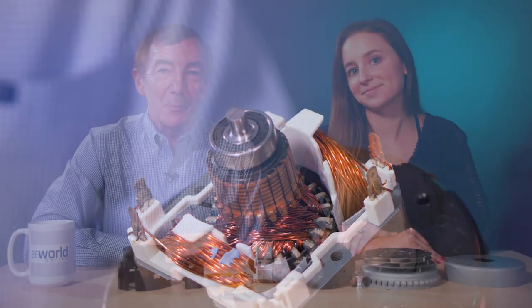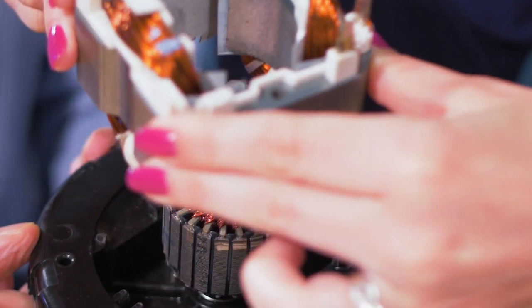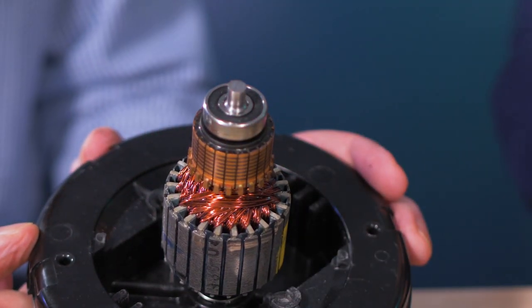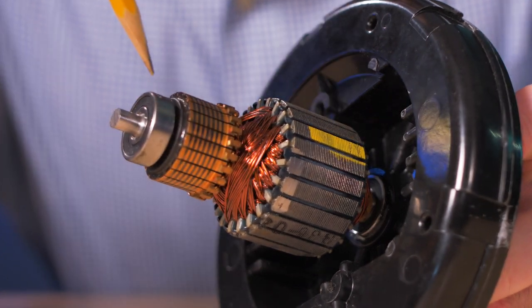Removing the thermoset bracket brings a view of the ball bearing assembly at the end of the motor shaft and it also lets you lift the stator assembly out from where it sits in the thermoset base. This gives a good view of the ball bearings at the other end of the motor shaft and of the rotor assembly.